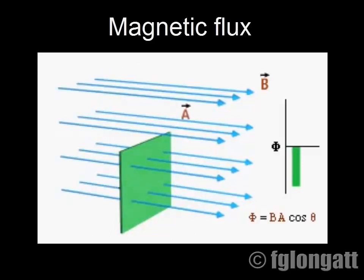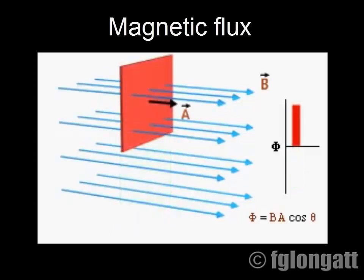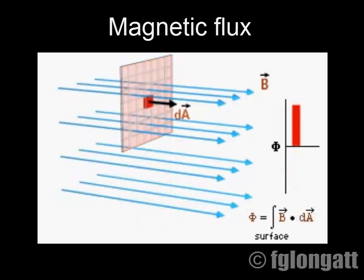Any surface can be built out of many tiny surfaces. So by letting the square become infinitesimally small, we can use calculus to define the magnetic flux through any surface.